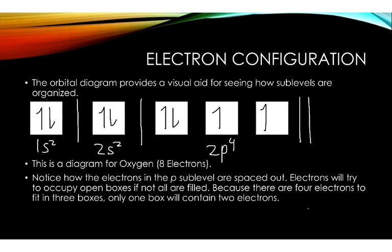Electron configuration. The orbital diagram provides a visual aid for seeing how sub-levels are organized. Below I have 1s² in a little box, and I have both my arrows there, which each stands for an electron. Then I have my 2s².